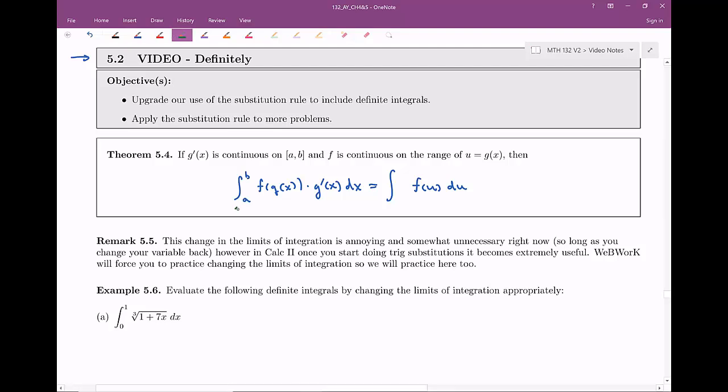These bounds back here, this a and this b, these were x values. But if I want to integrate with respect to u, I should have u values here. So how do I get u values? I plug them into my g, because my g is kind of this transfer rate. It transfers x values, which you input in here, and it outputs u values. So, the lower limit of integration would be g of a. What happens when you feed a into the g function? It spits out the u value, g of a, and then the upper bound of integration will be g of b. I'm feeding in b, the x value b, into this function, and it spits out the u value, g of b.